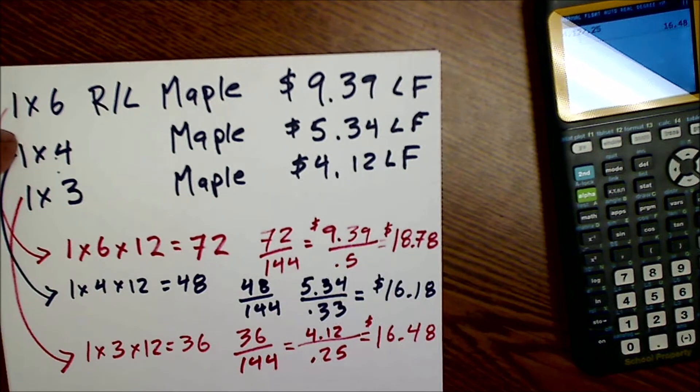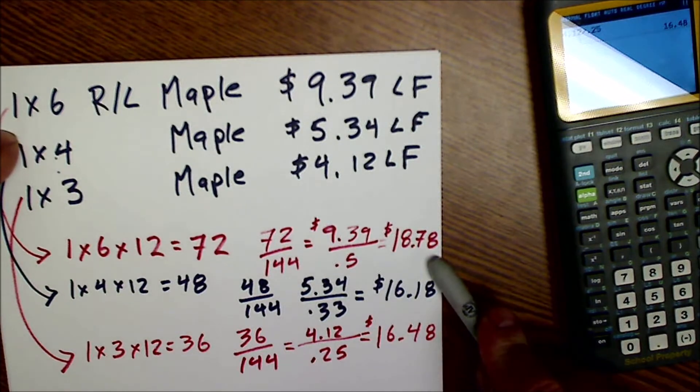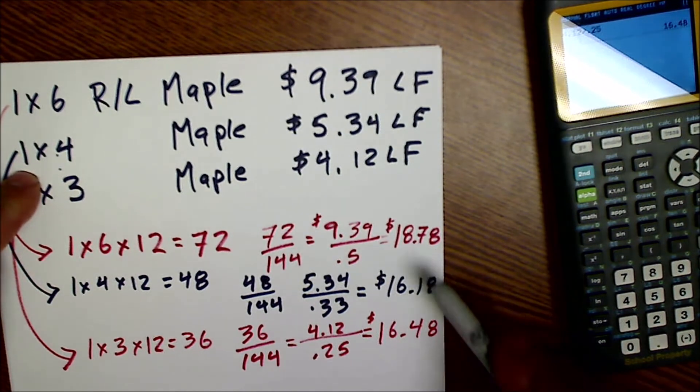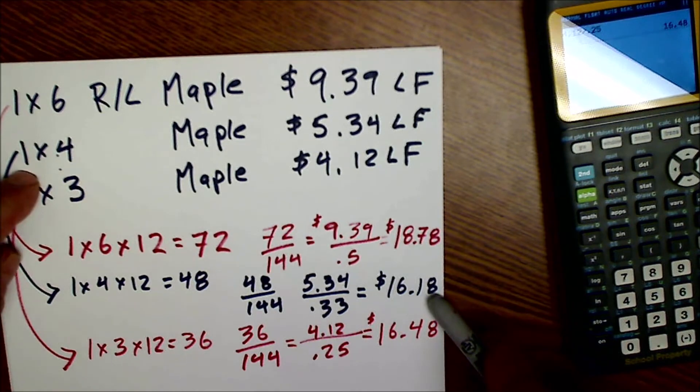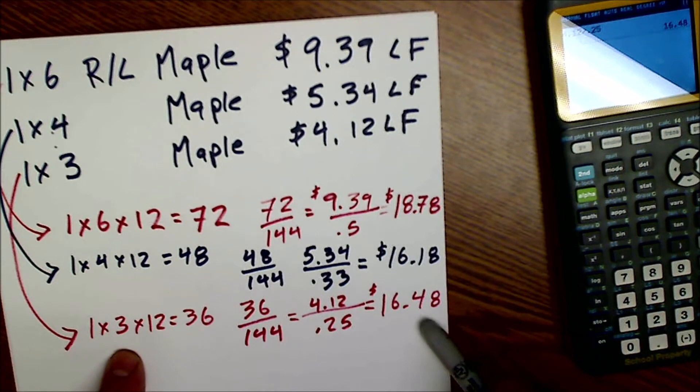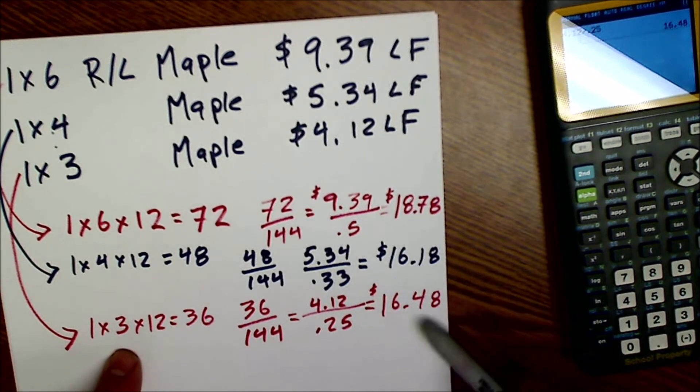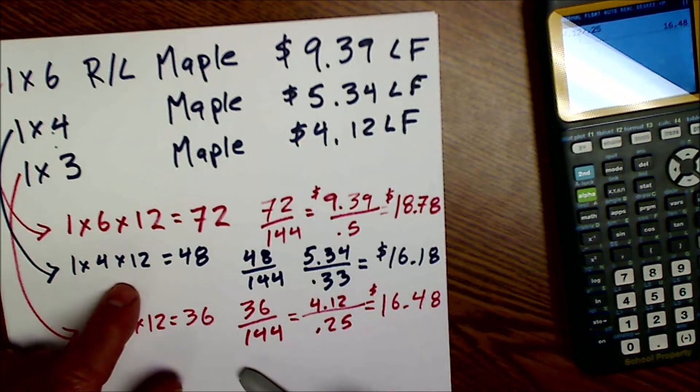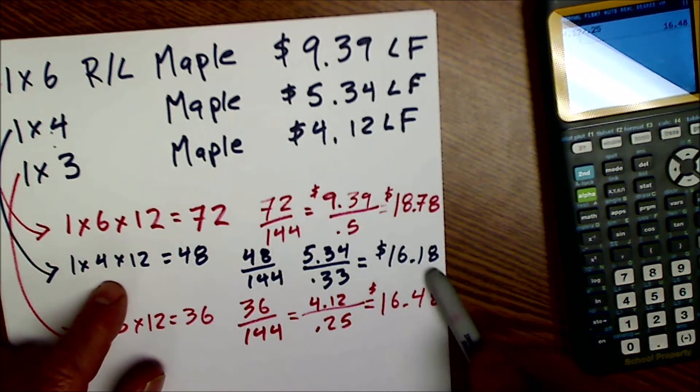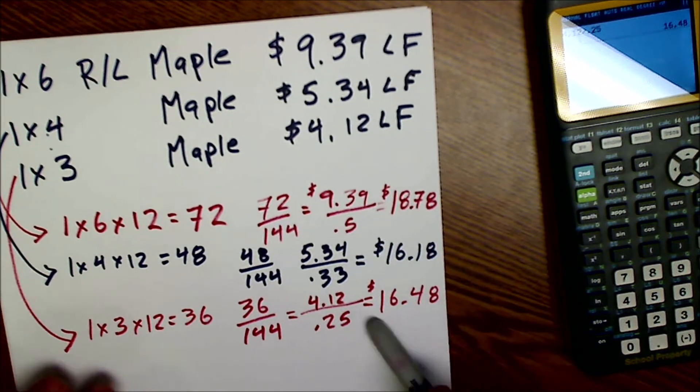If you want a 6 inch wide board, you have to pay $18.78 a board foot. But if you get a narrower board, it's a little bit less per board foot. And then if it's even narrower than that, the price jumps up a little bit again. The only reason I could think of that is that this is the most common one and they manufacture the most of it, and they're discounting it a little bit from these.